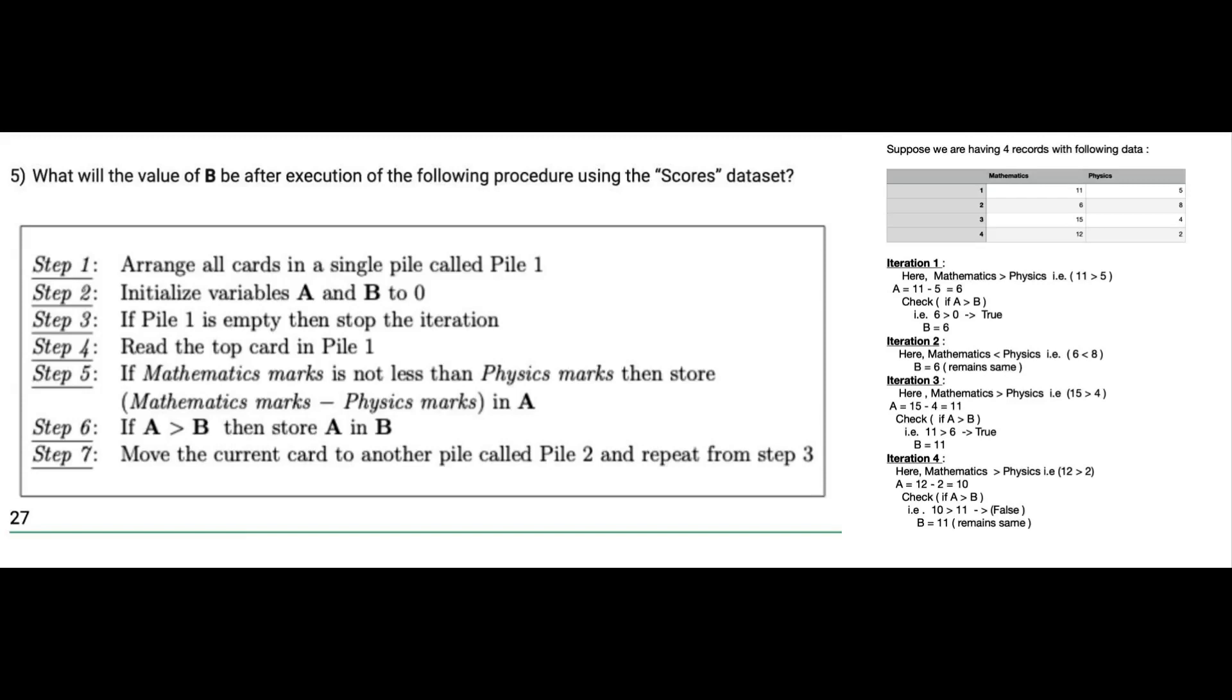This means that in all these steps, we are getting the value of B as 11. After checking all the data, we can analyze that B, which is 11, is the difference between mathematics and physics marks, and that difference is the greatest difference.